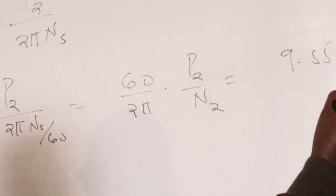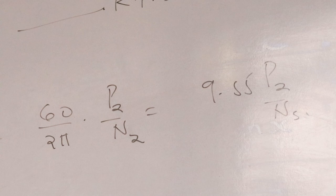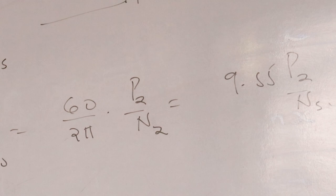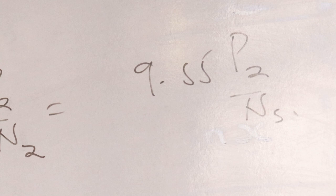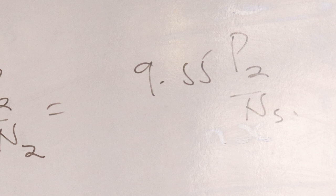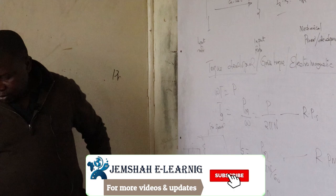Mark that: if you are working the P2 side, the speed is synchronous speed. If you are working from Pm to Pout, the speed is normal speed N. Now, under a later topic, the torque, mechanical power, and output — electrical relations between mechanical power, rotor copper loss, and input to the rotor.